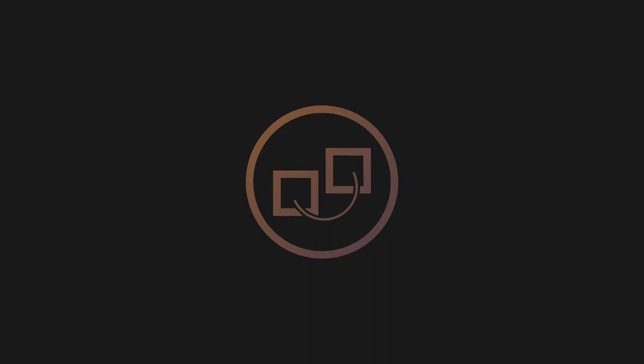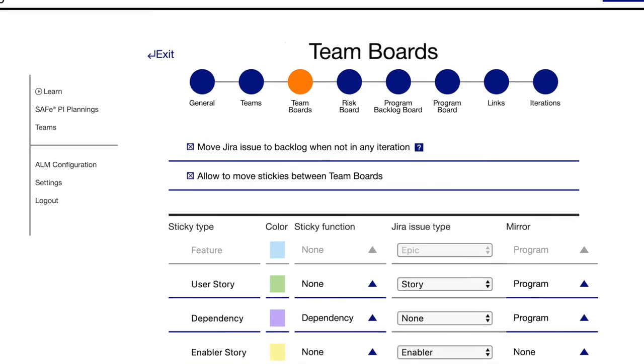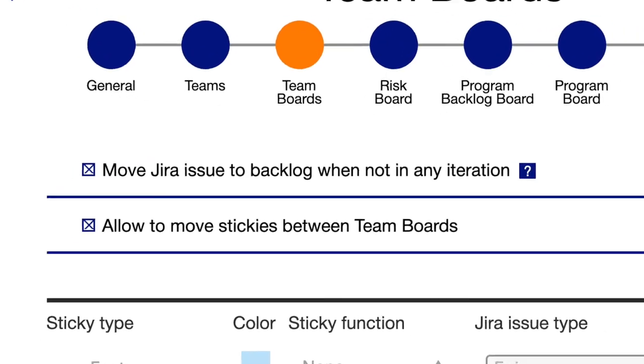Now let's get to the fun part — what features are new since we released the PI Planning web app. First, we made it default that Jira issues don't get deleted if they aren't in a synced iteration. So now you don't need to go back into a configured PI planning session to set the check mark manually — you are always on the safe side without even thinking about it.